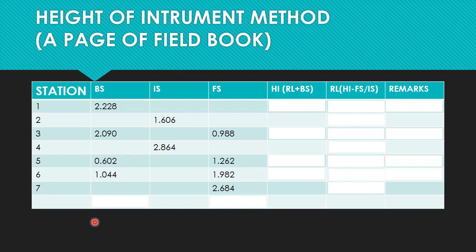In the question, the first reading was taken from a benchmark of 432.384. The height of the instrument equals the benchmark value 432.384 plus the back sight 2.228, which gives us the height of the instrument as 434.612. We have now obtained the height of the instrument for station one.